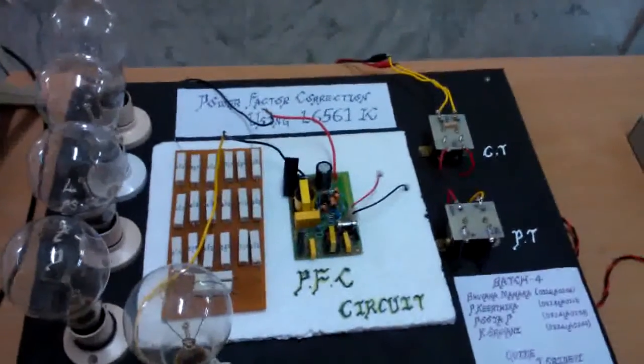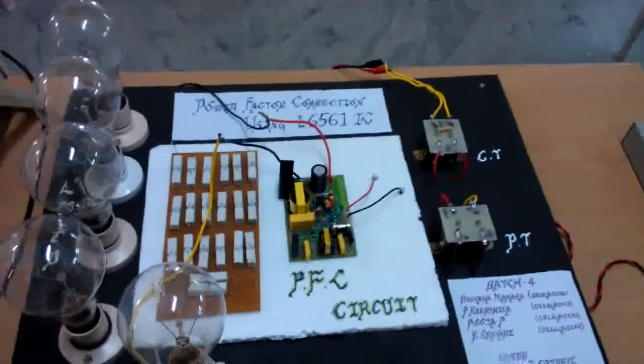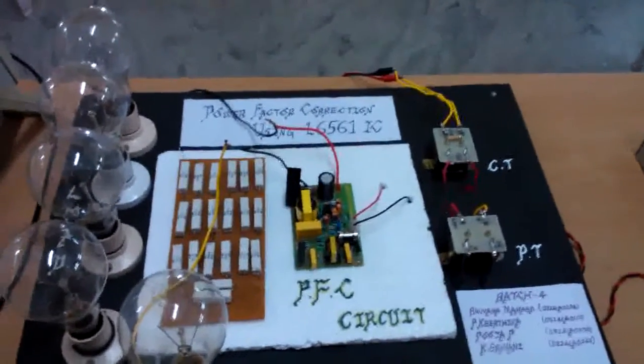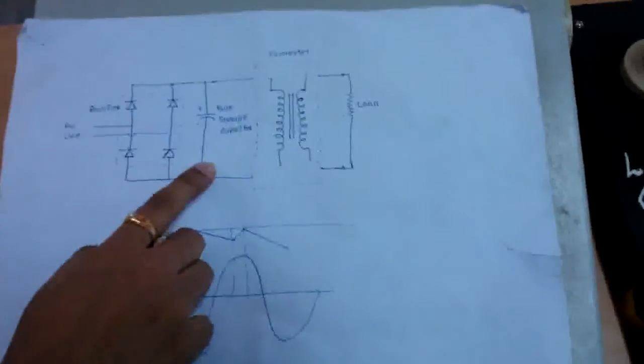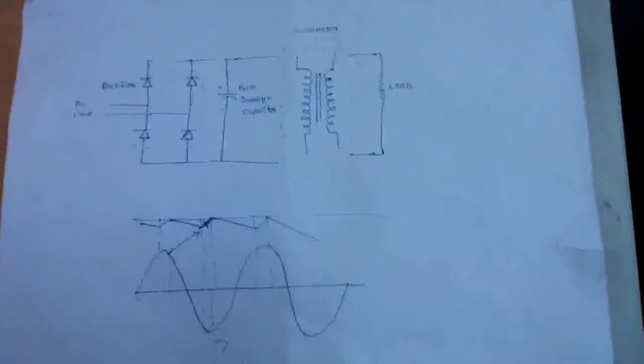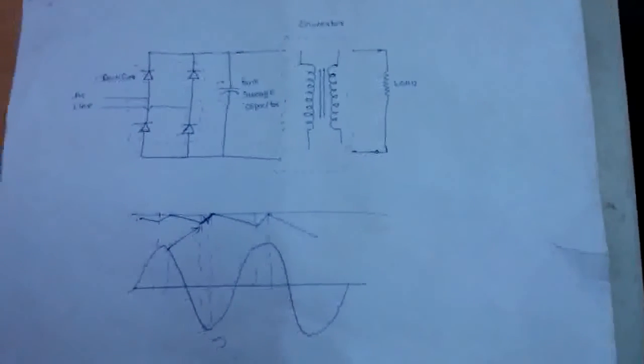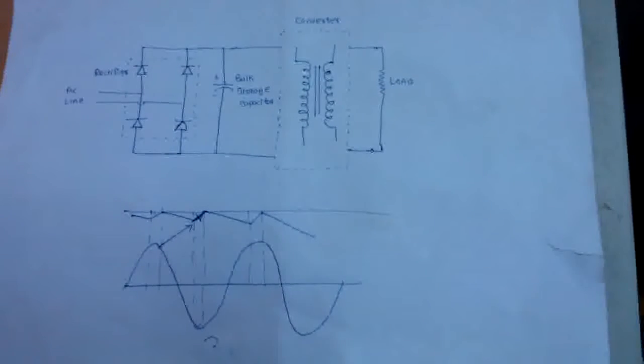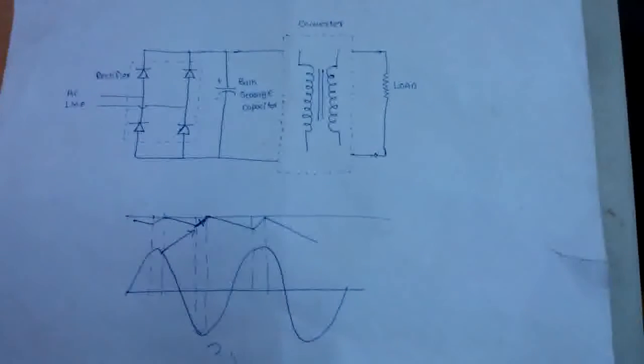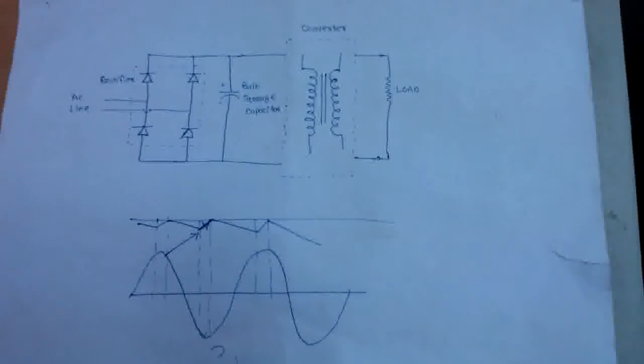In many applications, apparent power is always greater than the real power. Let us now understand the reason for it. Most offline appliances use a bridge rectifier associated with a bulk capacitor to detect raw DC voltage from the AC supply. This technique results in high harmonic content which will reduce the power factor.